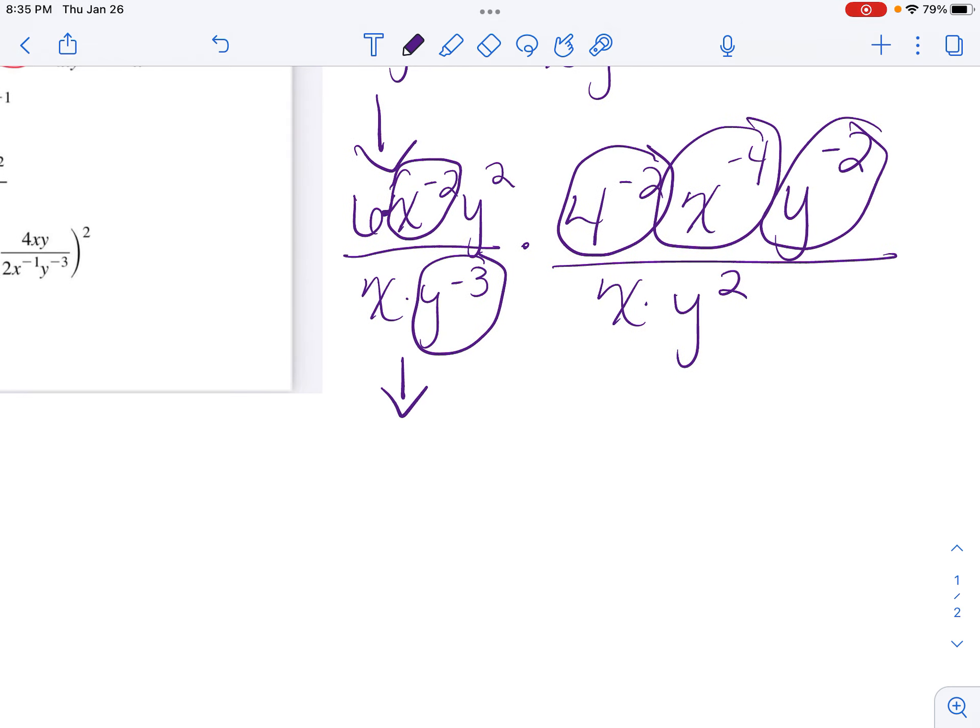So I'm going to bring down my 6, and on my bottom I have x. So I'm going to bring down my x squared, because I have to flip it for the inverse. On the top I have y squared, then on the bottom I have to move this y to the negative 3rd up for the inverse to make it positive.